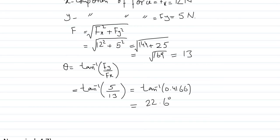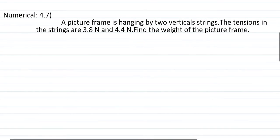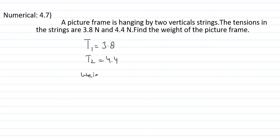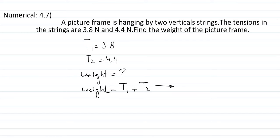Now solving problem 4.7: A picture frame is hanging by two vertical strings. The tensions in the strings are T1 = 3.8 newton and T2 = 4.4 newton. We have to find its weight. Since tension acts upward and weight acts downward, the sum of downward forces equals the sum of upward forces. So weight W = T1 + T2 = 3.8 + 4.4 = 8.2 newton.